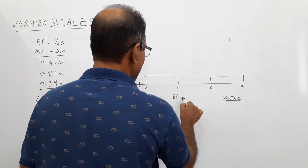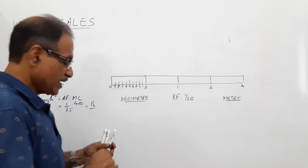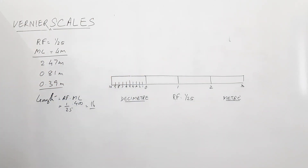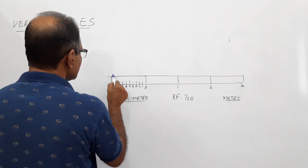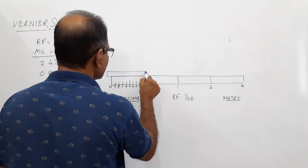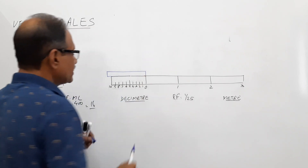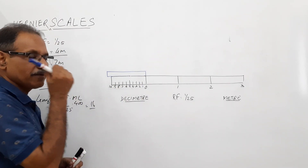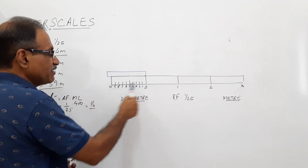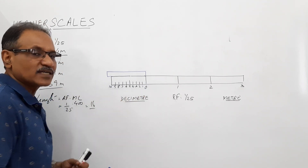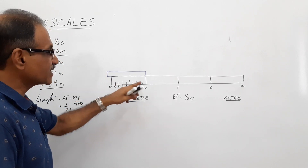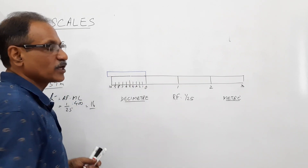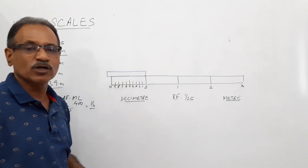Now, with RF 1/25, you are asked to draw a vernier scale. Take 11 divisions and construct a rectangle here. The length corresponding to 11 divisions — this is 10 divisions, one meter divided into 10 equal parts. Take the length corresponding to 11 decimeters and construct a small rectangle, then divide that rectangle into 10 equal parts.